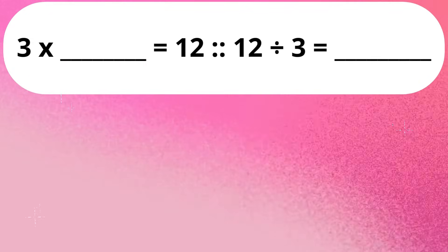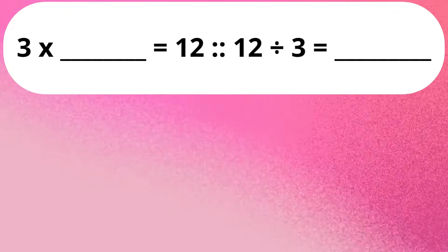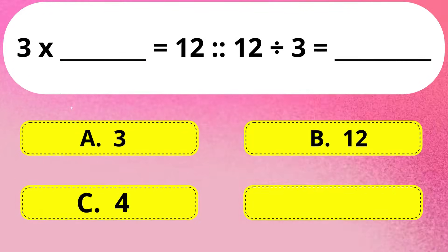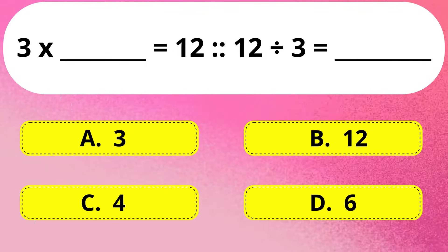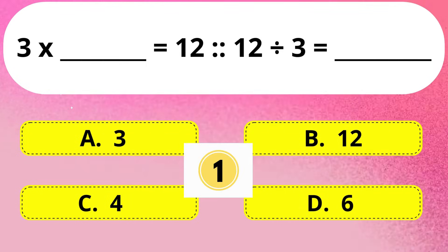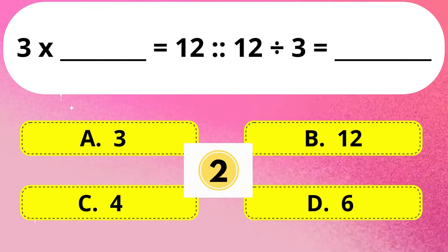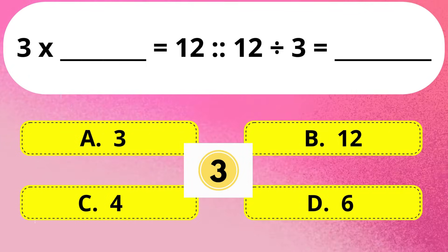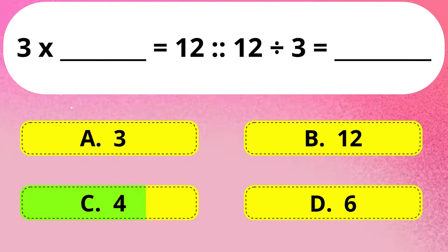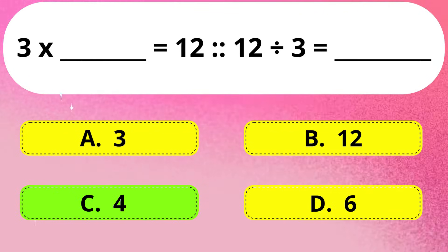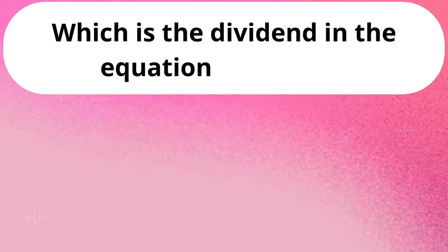Next question. 3 x dash is equal to 12, same as 12 divided by 3 is equal to dash. The right answer is Option C: 4.